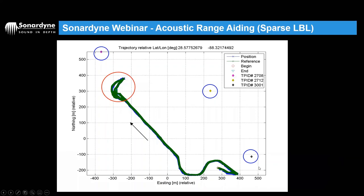Sparse LBL is mainly a cost-saving measure. In a typical pipeline survey you'd have a full LBL array with transponders all around, but here you can see just three transponders all on one side of the pipeline. We can reduce the number of transponders, reduce calibration time, and that reduces the overall cost of the project.